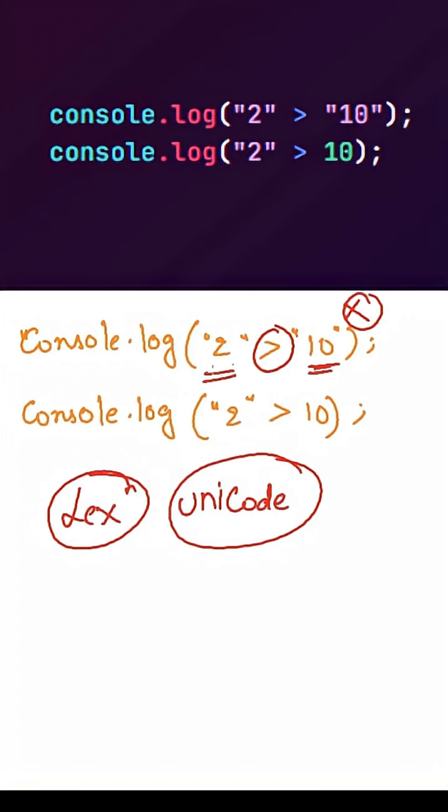So the first character in this string will be 2, the first character in this string will be 1. So 2 is converted into the unicode value that is 50. 1 is converted into the unicode value that is 49. As 50 is greater than 49, it will return true.